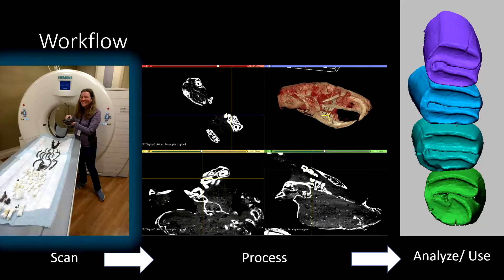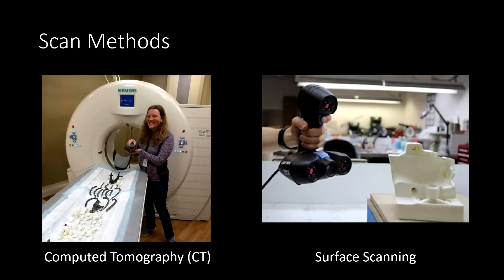Now I'm going to be giving an overview of the different scan methods available to generate 3D digital data. The two major scan methods I'd like to talk about are computed tomography and surface scanning.